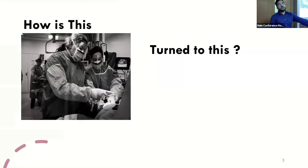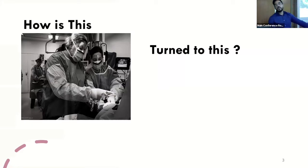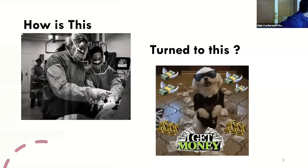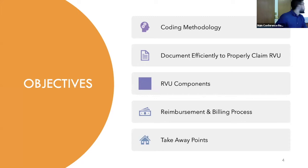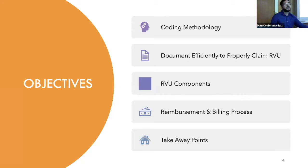How does what we do in the emergency department — from providing patient care to performing procedures and diagnostics and ultimately treating the patient — turn to this? Starting with the objectives: number one, understanding the coding methodology; number two, how to document efficiently to properly claim your RVUs; number three, the RVU components; number four, the reimbursement and billing process; and we're going to wrap up with our take-home points.